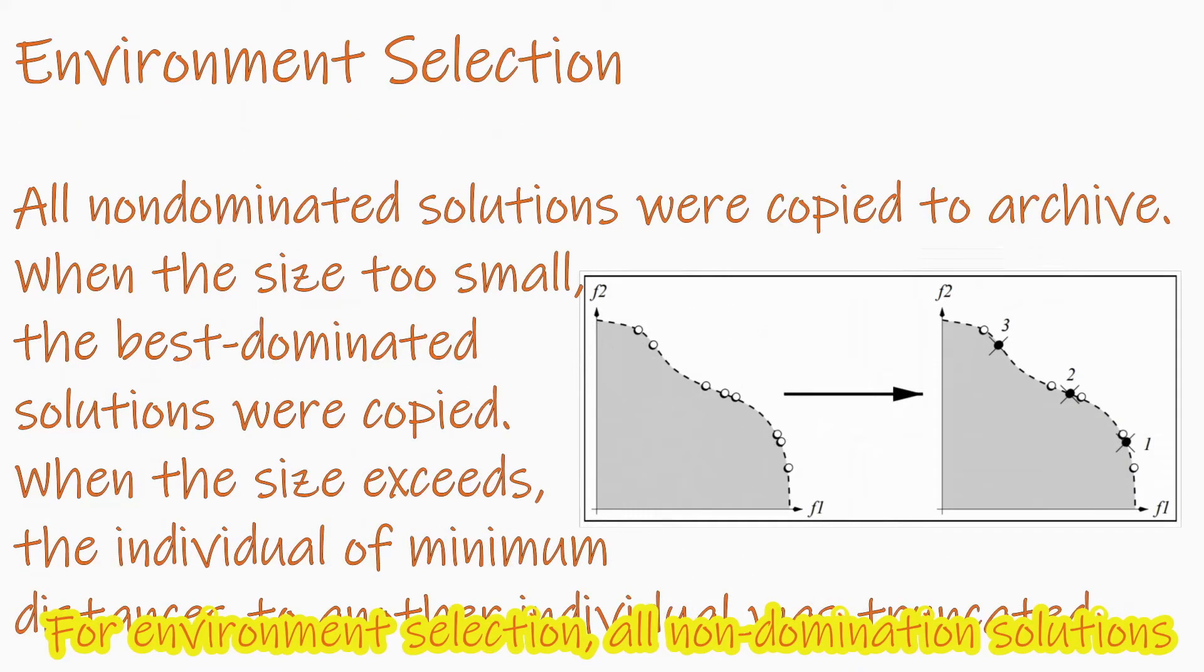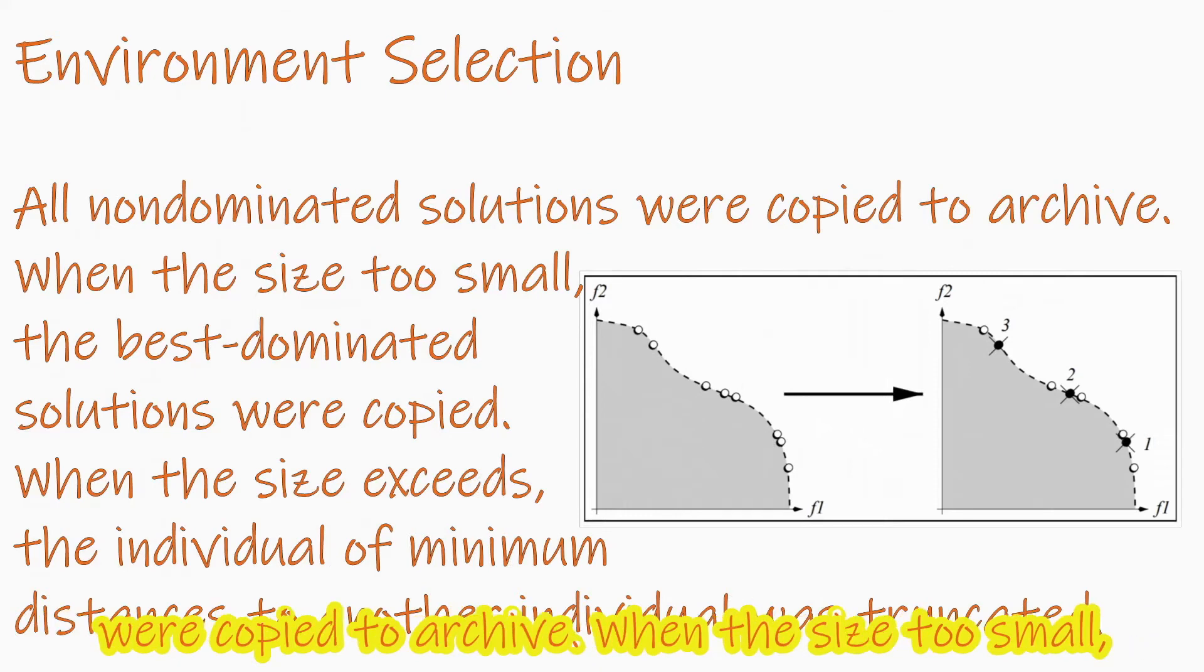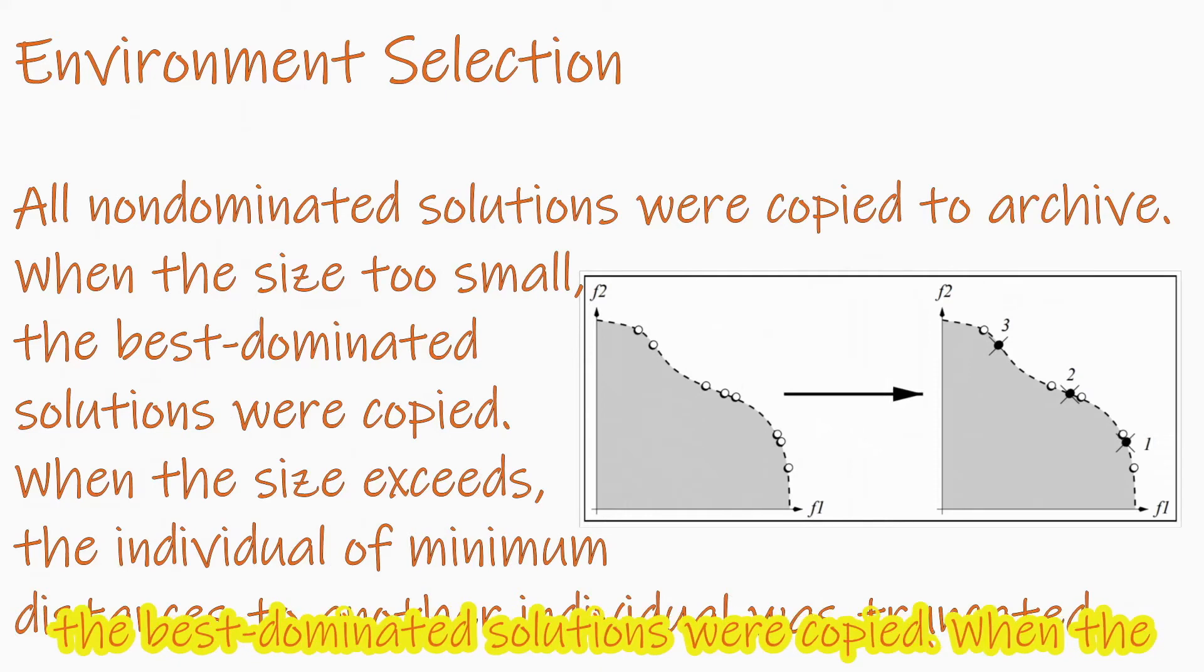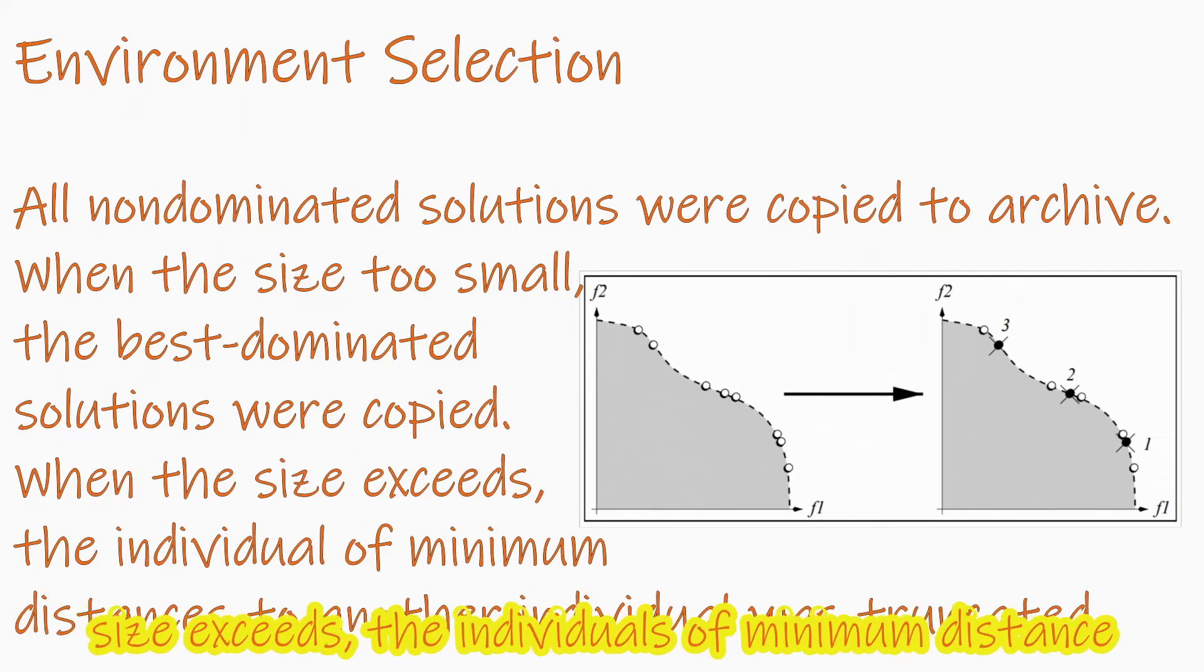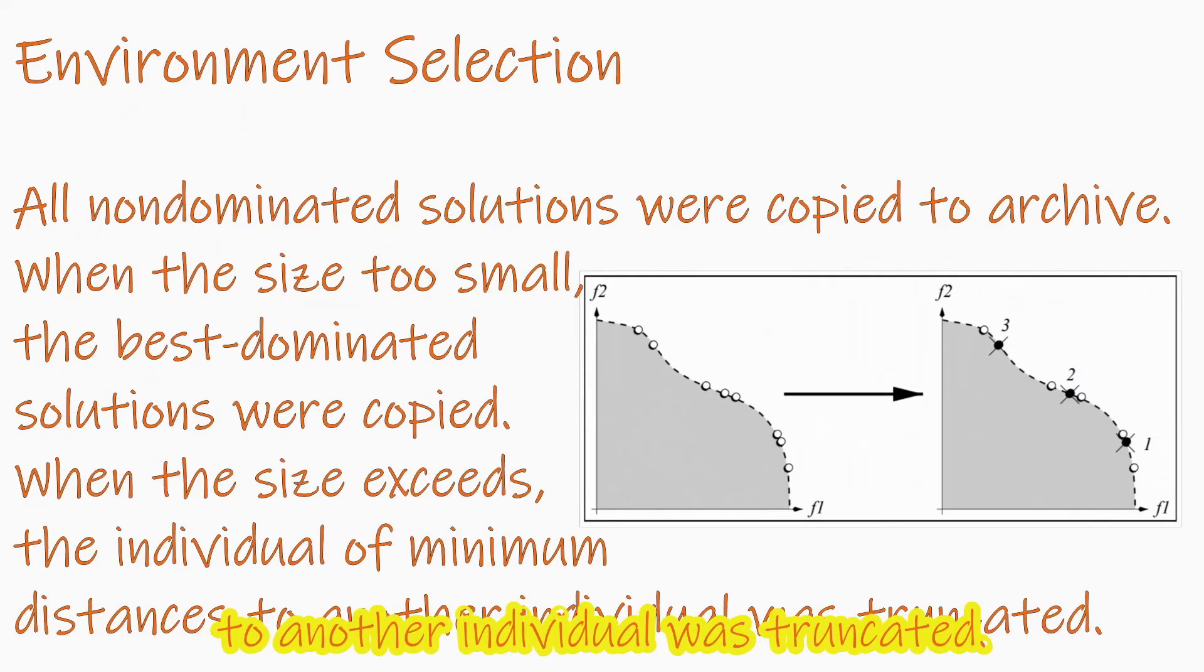For environment selection, all non-dominated solutions were copied to archive. When the size too small, the best-dominated solutions were copied. When the size exceeds, the individual of minimum distances to another individual was truncated.